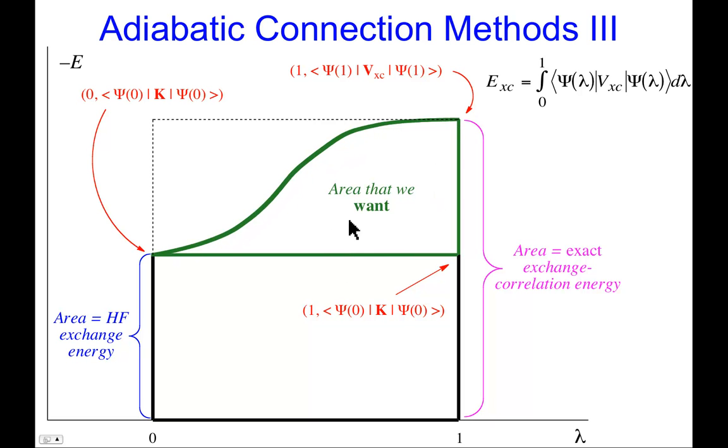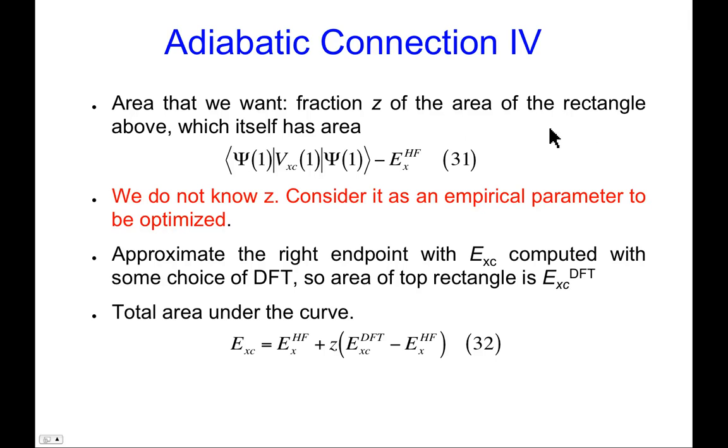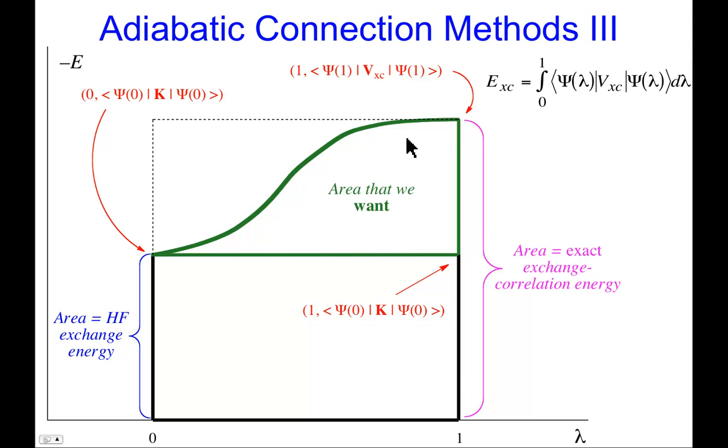What I want, the value of this integral, is the whole area under this curve. So what I want to find actually is this piece in here. I've got Hartree-Fock exchange energy, and I must need to add something else in order to get the sum of these two, which is the integral. And that's what I want. That area that we want is actually some fraction, I'll call it z, of the area of a rectangle above.